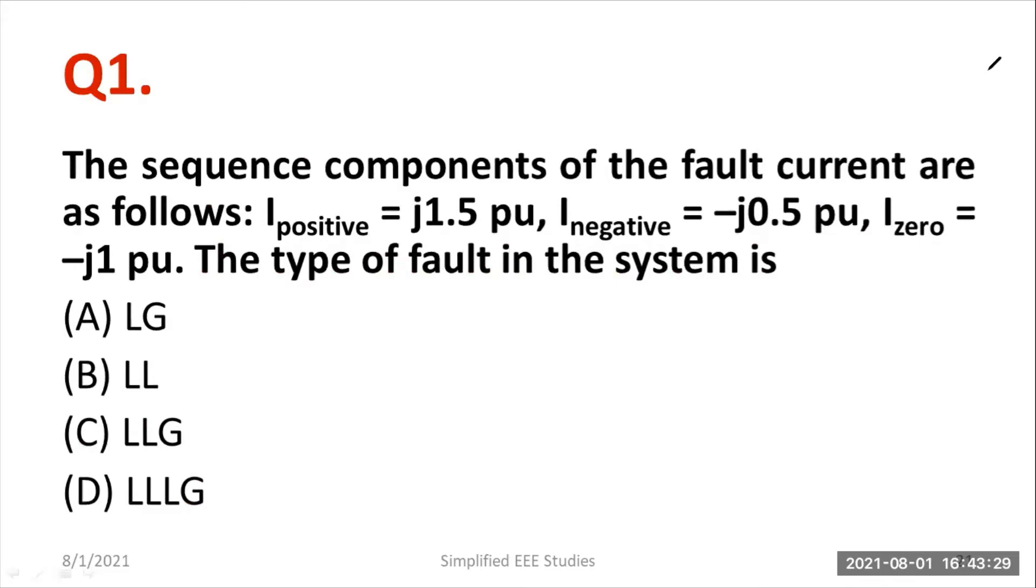Let us go to the first question. The sequence components of the fault current are as follows. The positive sequence current I_positive is equal to j1.5 per unit, I_negative is equal to minus j0.5 per unit, I_zero is equal to minus j1 PU. The type of fault in the system is: line to ground, line to line, double line to ground, and triple LG or you can call it three phase fault. So which is the right answer?